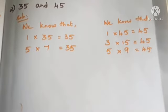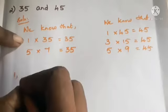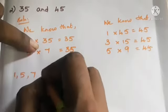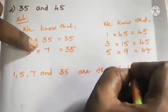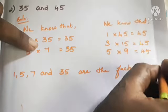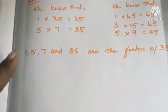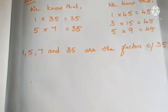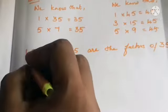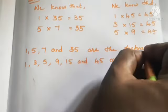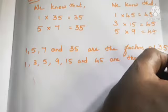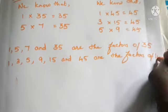Write the factors: factors of 35 are 1, 5, 7, and 35. Factors of 45 are 1, 3, 5, 9, 15, and 45.